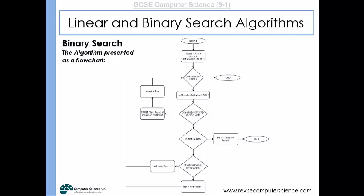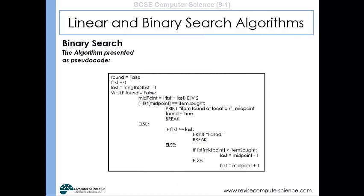If the midpoint item is lower than our target, we do the opposite and adjust the lower bound. That loop continues until the item is found or the search fails. Here's an example of the binary search algorithm written in pseudocode for you to work through in your own time. Trace through that algorithm and see if you can match the steps to the worked example of searching through the array.